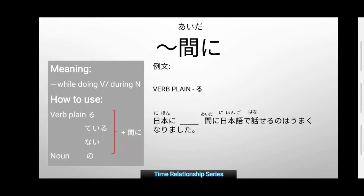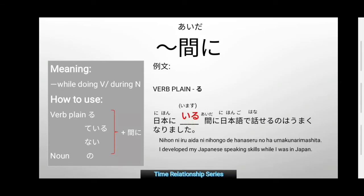Nihon ni [blank] aida ni, Nihongo de hanasiru no wa umaku narimashita. Nihon is Japan, Nihongo is Japanese language, hanasiru/hanasu is to speak. Umaku narimashita means to become good. The verb here is imas — to make it verb plain ru, we remove 'mas' and add 'ru', making it 'iru.' So: Nihon ni iru aida ni, Nihongo de hanasiru no wa umaku narimashita. In English: I developed my Japanese speaking skills while I was in Japan.